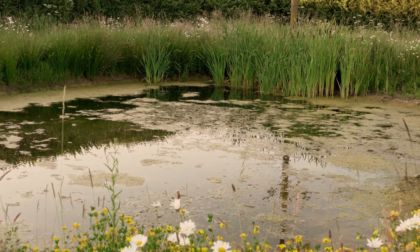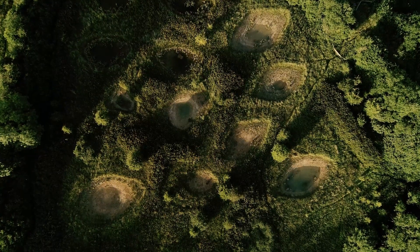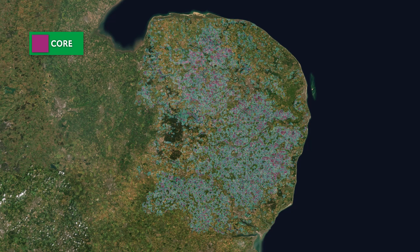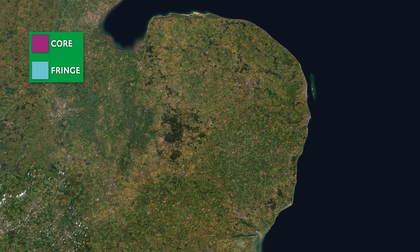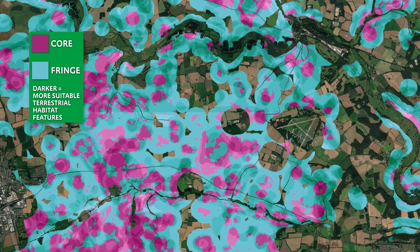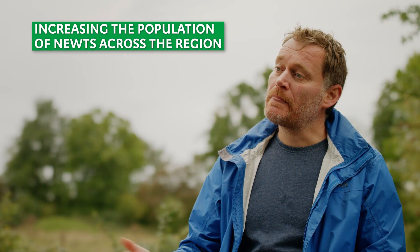The final maps we produce identify the best places to put ponds to benefit great crested newts across the entire landscape. We do that via our strategic opportunity areas, or SOAs. These are maps that identify core and fringe areas where, if we place ponds, we hope to increase the distribution or population of newts. Core areas are where we already expect there to be newts and suitable habitat - placing ponds there should increase the population. Fringe areas surround the core areas, likely having suitable terrestrial habitat but few ponds. By placing ponds there, we hope newts will disperse from core areas into fringe areas and increase the population across the region.